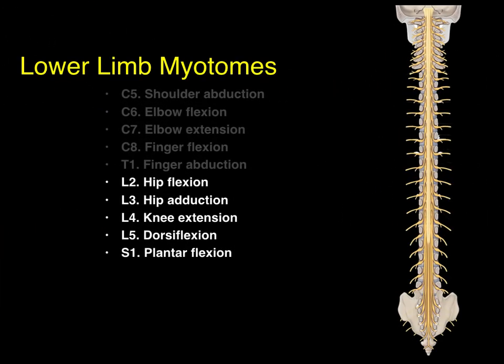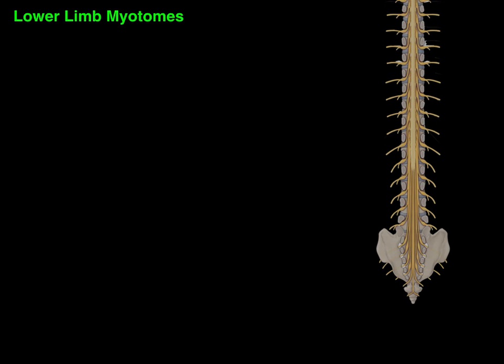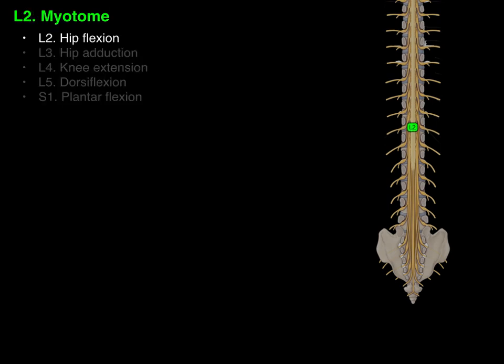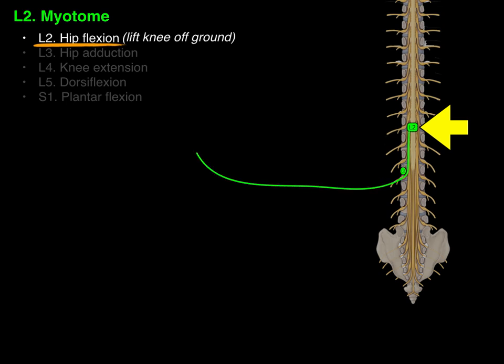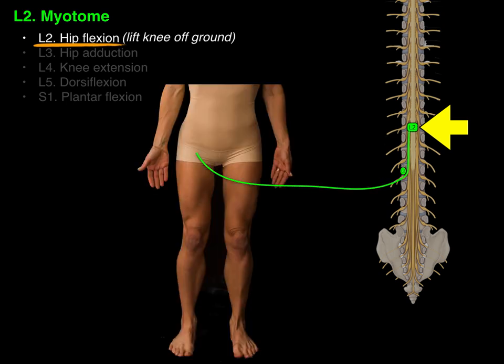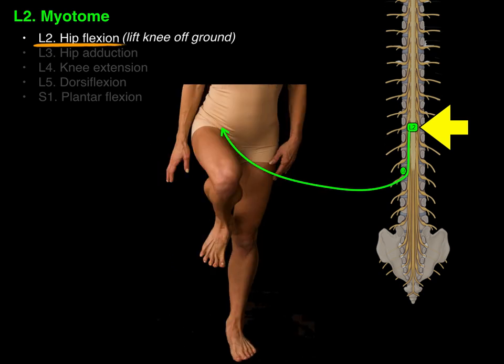Now let's go to the lower limb myotomes, starting with L2. The L2 myotome is hip flexion, which is lifting the knee off the ground. There's the L2 spinal cord level and the L2 vertebra; the nerve courses down and goes out to the hip flexors, causing that movement — lifting the knee off the ground, or flexion of the hip joint.